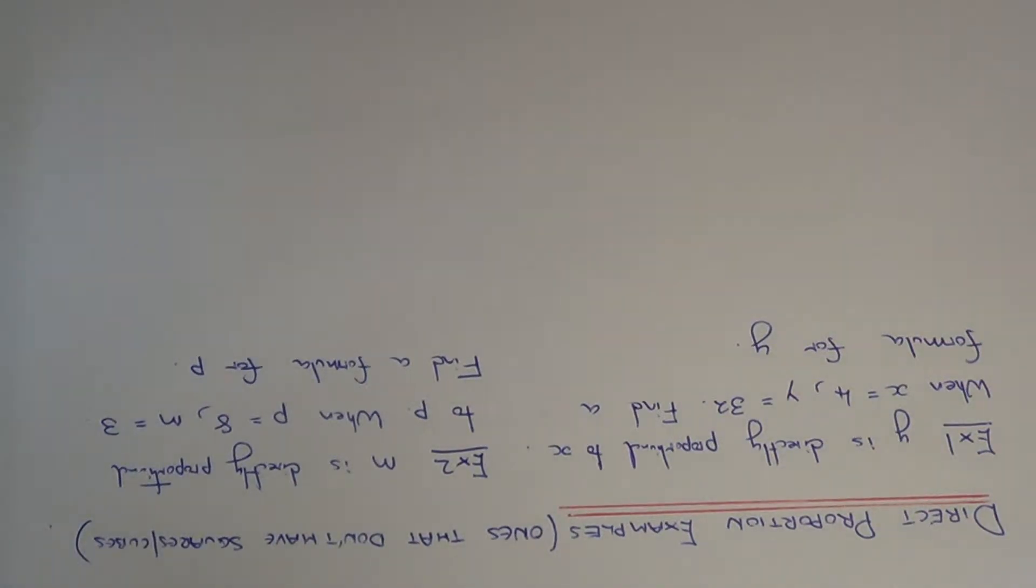Today I'm going to show you a couple of examples on working out formulas when one variable is directly proportional to another one. So let's have a look at our first example, example one.